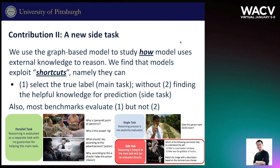The second contribution is the introduction of a new side task to discover shortcuts, where shortcuts mean the model selects the true label without finding the helpful knowledge for prediction. Some benchmarks, such as VQA, ask a single question — answering is explicitly evaluated while reasoning evaluation is only implicit. Some tasks, such as VCR, treat answering and reasoning as parallel tasks and do not enforce the answer prediction to be based on the rationale.